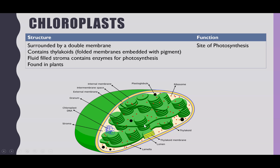The chloroplast is our second double membrane organelle, with an inner and outer membrane. Within the chloroplast we also have folded membranes called thylakoid membranes, which are highly folded and stack up like stacks of coins — these stacks are called grana, and one stack by itself is called a granum. The thylakoids are embedded with chlorophyll pigments. The fluid inside the organelle is called the stroma, which contains enzymes needed for photosynthesis. The function of the chloroplast is as the site of photosynthesis — using light energy to create organic compounds.